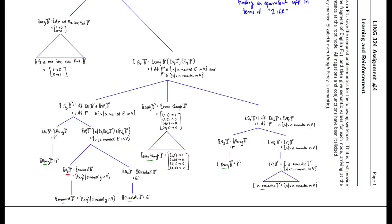Every single node above the terminal nodes — so the VT, N2, N1, VP1, S3, conj, N3, VP2, VI, S4, and so on — needs to have both a rule (showing where it's getting its meaning from) and then the value itself.